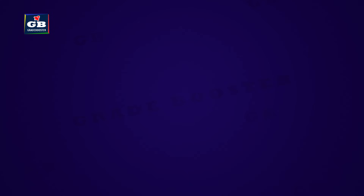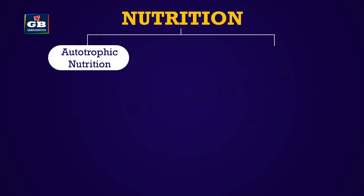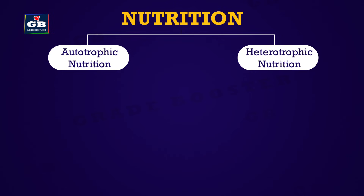Nutrition in living things is mainly of two types: one, autotrophic nutrition, and two, heterotrophic nutrition.